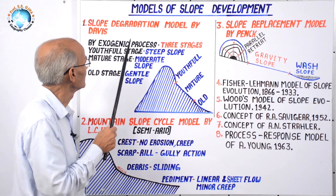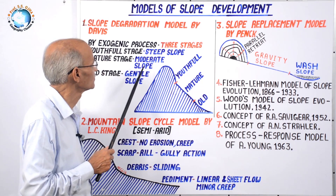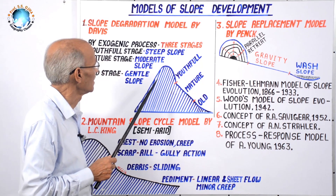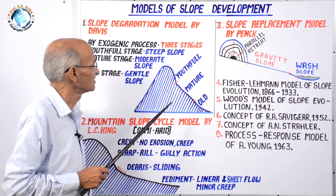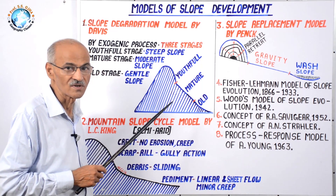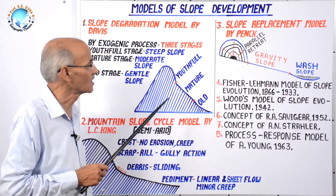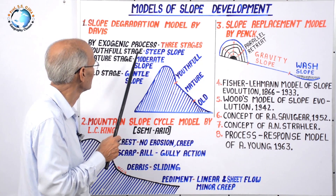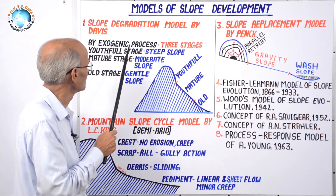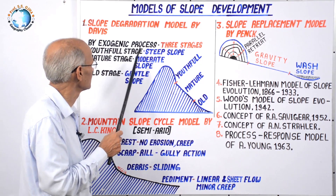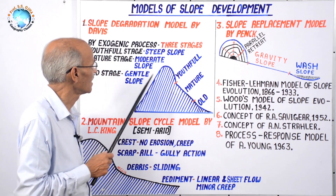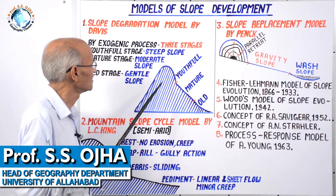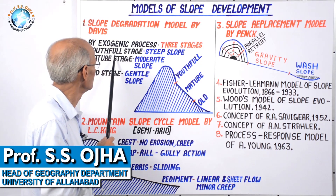In the Davisian cycle of erosion, Davis proposed three stages and presented the concept of trio — structure, process, and stage — which controls landform development. Davis supposed that endogenic forces raise mountains, but exogenic processes erode the higher regions and deposit material in the lower areas.